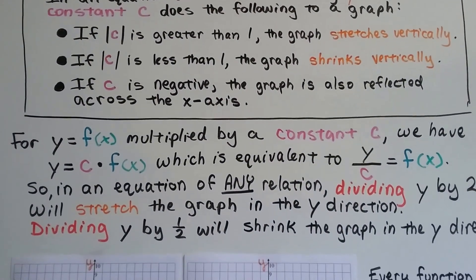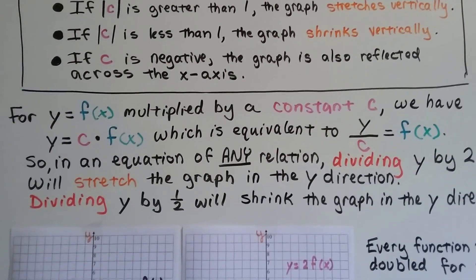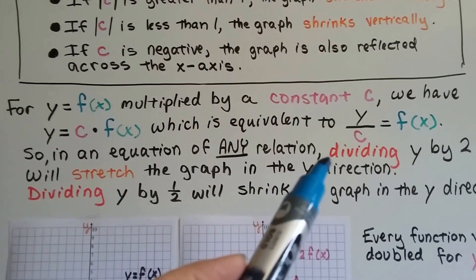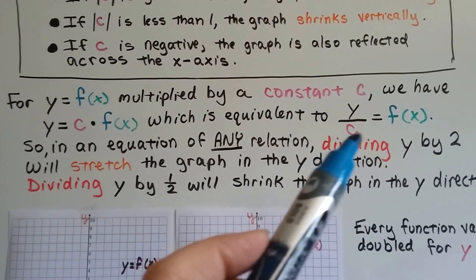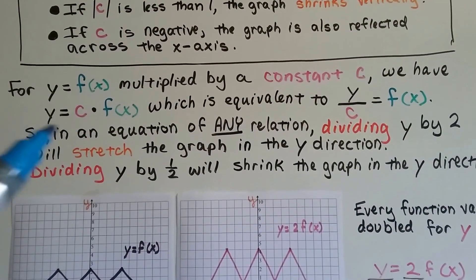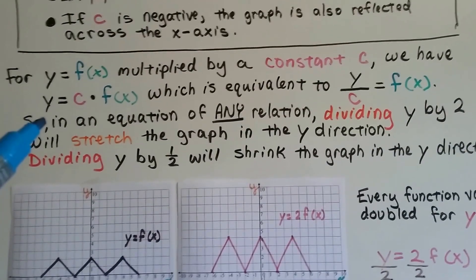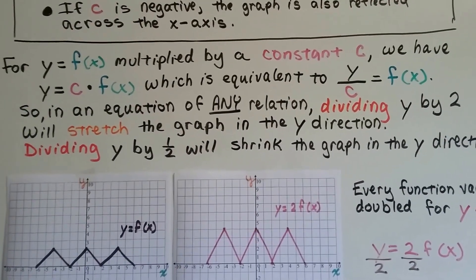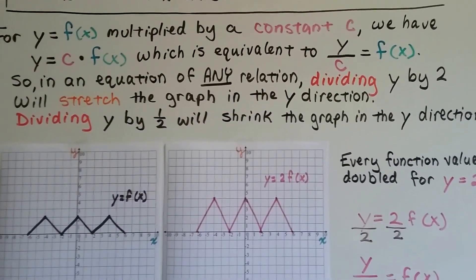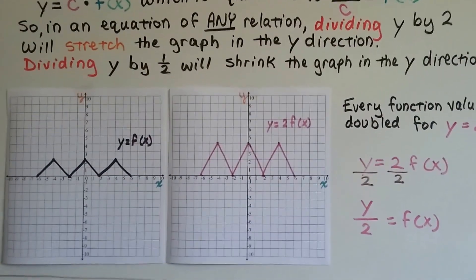For y equals f(x) multiplied by a constant c, we have y equals c times f(x). That's equivalent to y divided by c equals f(x), because we can divide both sides of the equation by c. That'll create a 1 here, and then we'll have y over c — the quotient of y and c. So dividing y by 2 will stretch the graph in the y direction, and dividing y by half will shrink the graph in the y direction.